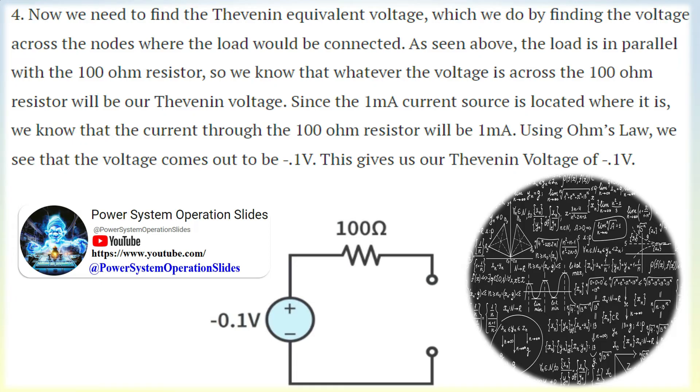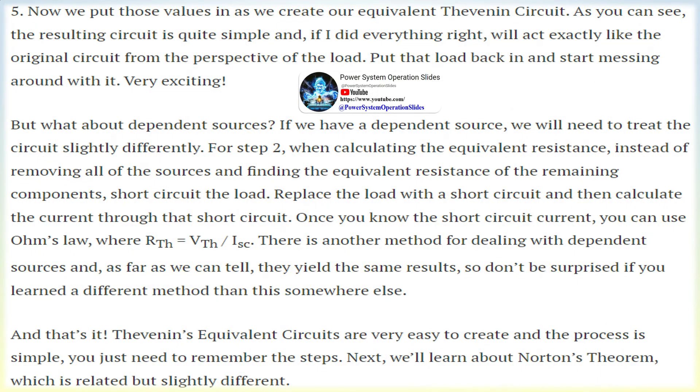Limitations of Thevenin's theorem. Thevenin's theorem is only applicable in specific situations, given a couple of limitations. Thevenin's theorem is applicable only to linear circuits, e.g., only passive resistors, inductors, and capacitors. Thevenin's theorem is not applicable to nonlinear devices such as diodes and transistors.